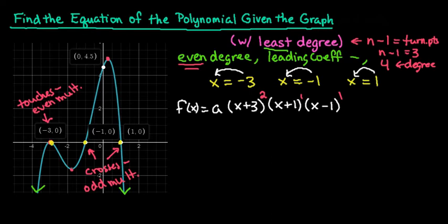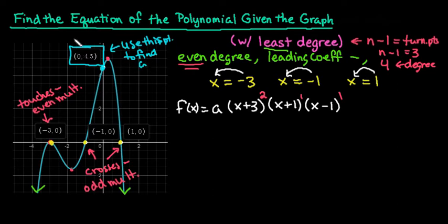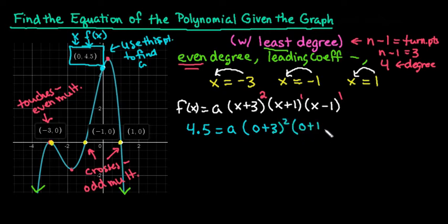Now we have all the information to find our equation. The next step is to use the given point (0, 4.5) to find 'a'. We replace x with 0 and f(x) with 4.5, giving us: 4.5 equals a times (0 plus 3) squared times (0 plus 1) times (0 minus 1). The first-power exponents are just understood to be there — I wrote them to show the lowest odd multiplicity.